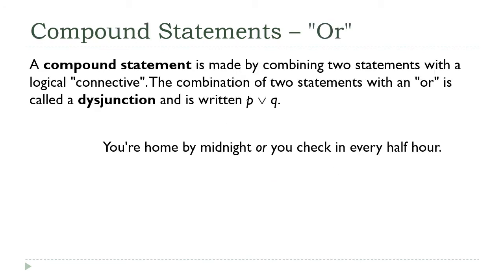So those are statements, and statements are a lot like just a single variable, like an x by itself. There's not much we can do with it. Where things start to get interesting is when we start to combine statements together. So a compound statement is made by combining two statements with a logical connective. There's going to be four of these that we look at over the course of the chapter here, and we're going to start with an 'or'. So the combination of two statements with an 'or' has got a fancy name - it's called a disjunction. Most of the time I'm just going to refer to it as an or statement, and it's written with this symbol here.